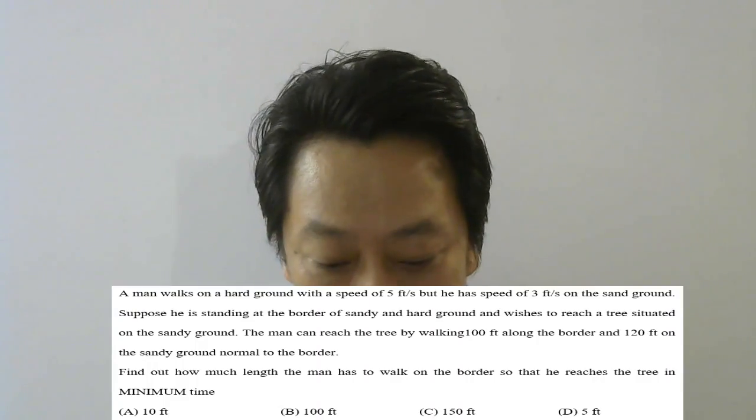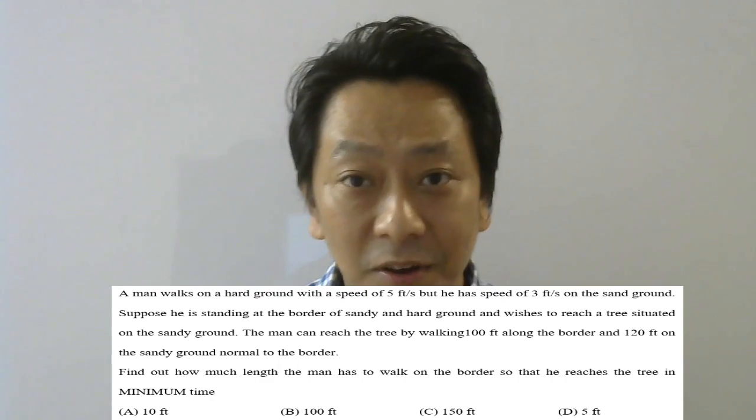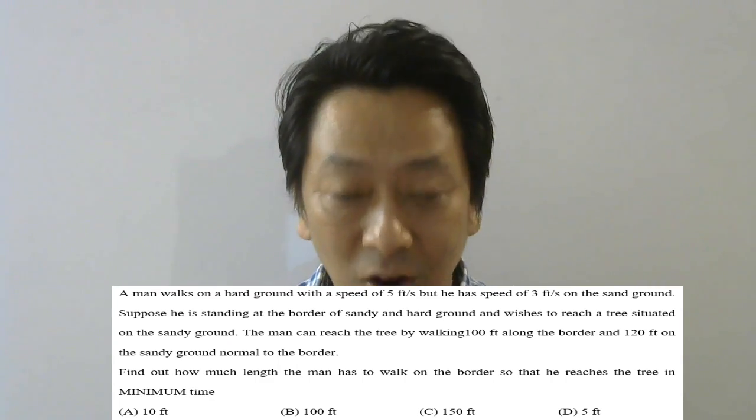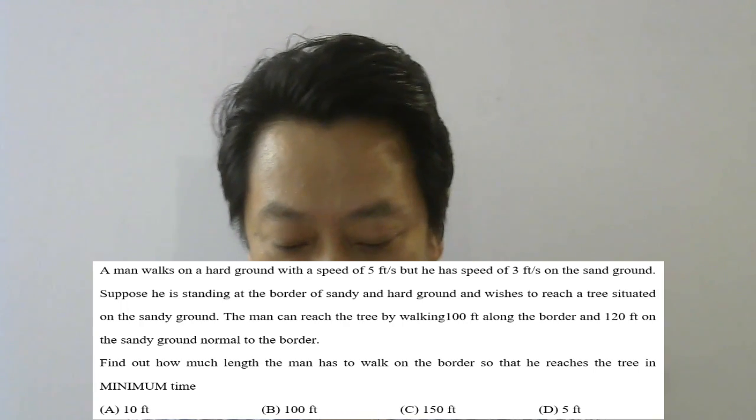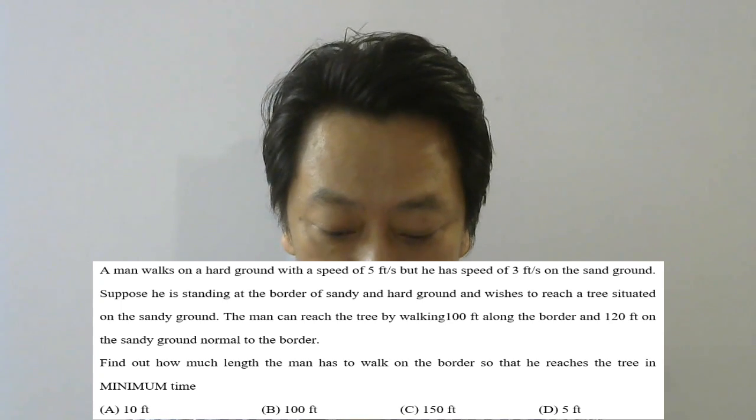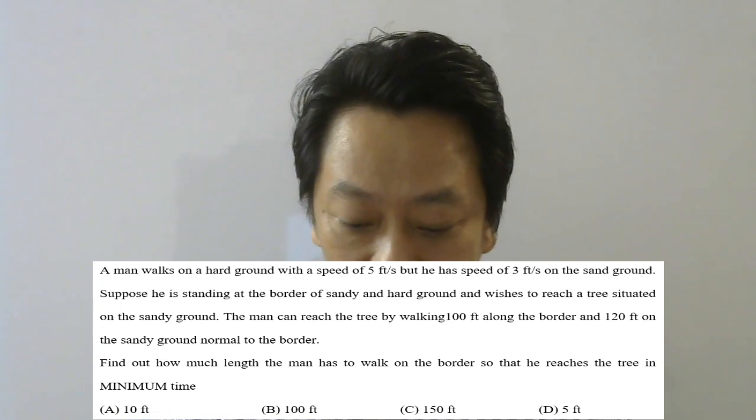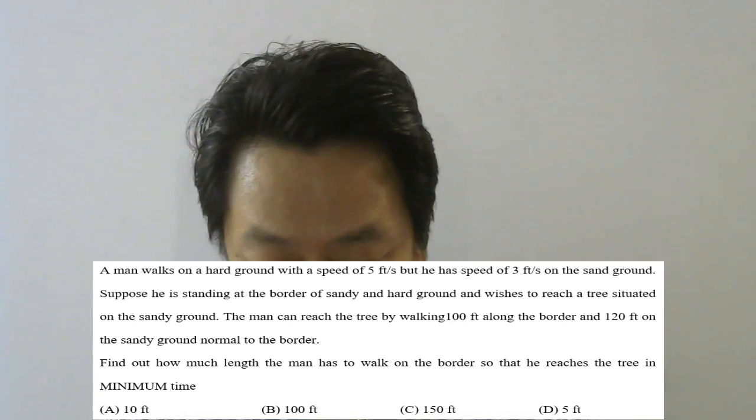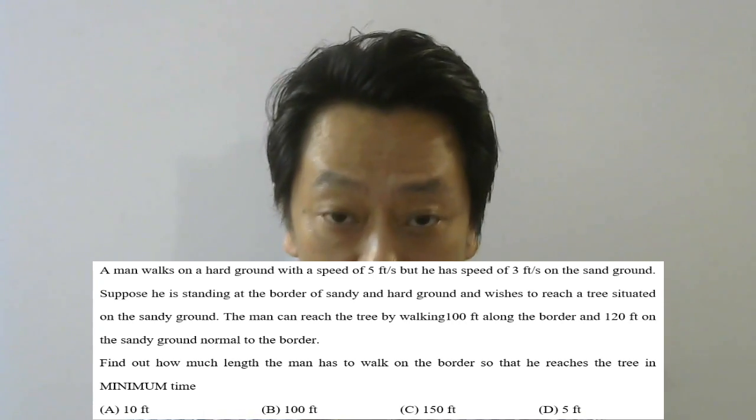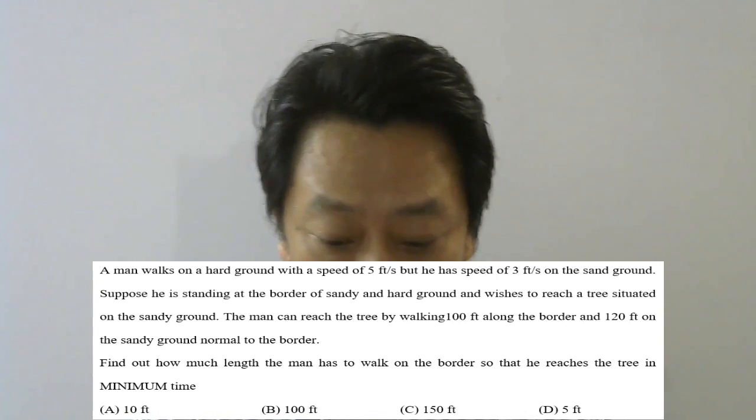The question says a man walks on the hard ground with a speed of 5 feet per second but he has speed of 3 feet per second on the sand ground. This means on sand ground he is moving slower. This is very similar to how light travels slower in water than compared to air. Suppose he is standing at the border of sandy and hard ground and wishes to reach a tree situated on the sandy ground. The man can reach the tree by walking 100 feet along the border and 120 feet on the sandy ground normal to the border. Normal here means perpendicular to the border.